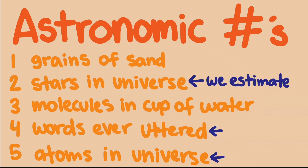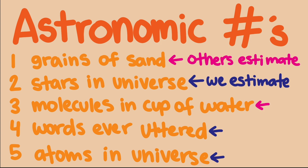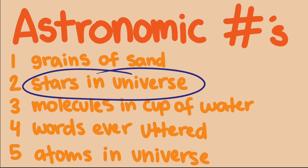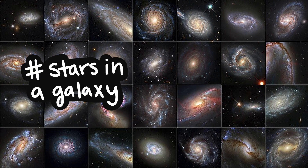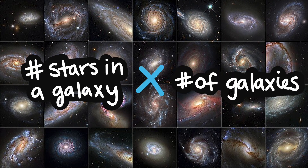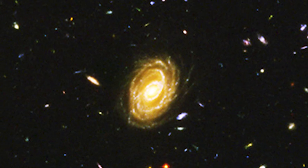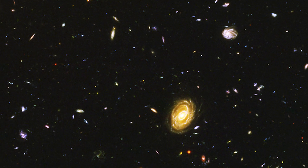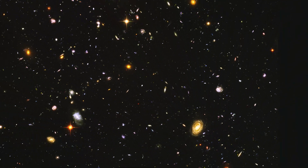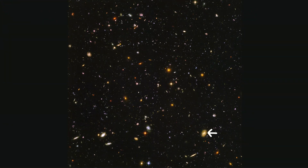We'll do the estimates for the stars, words, and atoms in the universe, and compare them with estimates others have done for grains of sand and molecules in a cup. Let's start with stars. How could we approximate the number of stars in the known universe? Stars tend to be grouped in galaxies, so if we know approximately the number of stars in each galaxy and the number of galaxies, we can just multiply. One way scientists have estimated the number of galaxies is by taking a picture of a piece of the night sky, counting the number of observable galaxies, then multiplying by the number of pictures needed to photograph every part of the sky.